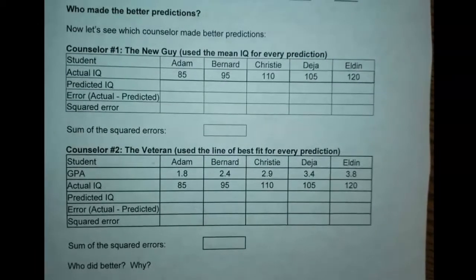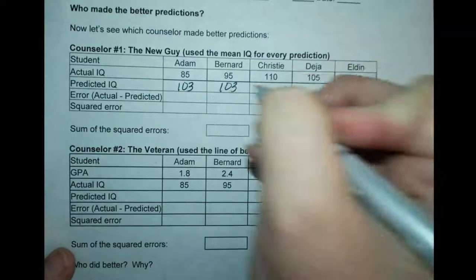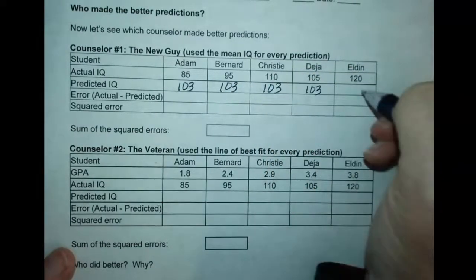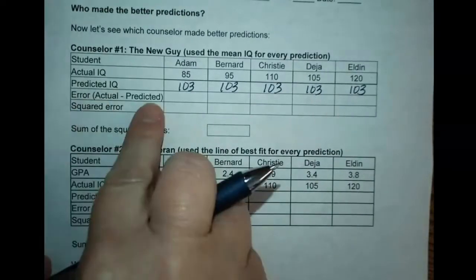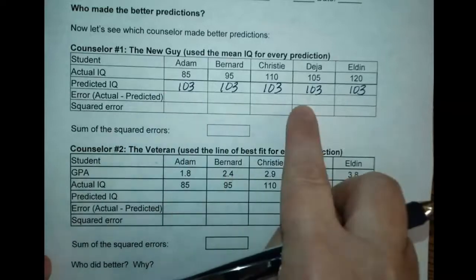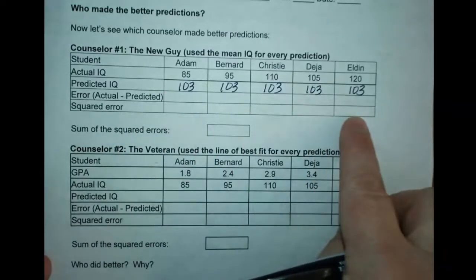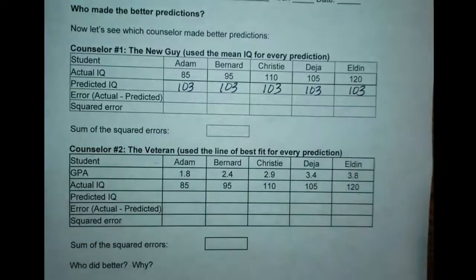Now let's see who made better predictions between counselor one and counselor two, because they didn't go and find the truth. We have the new guy who averaged the IQs for everyone, so his predicted IQ for everyone was 103. We're going to find the residual. The error is the residual: actual minus predicted. I want you to fill those in, then take that number and square it. Add up all the sum of the squares and put that total there. Stop the video and come back when you're ready.